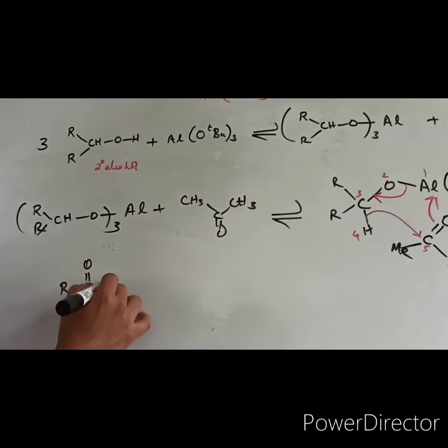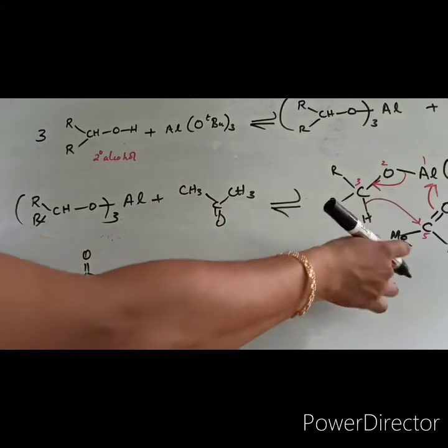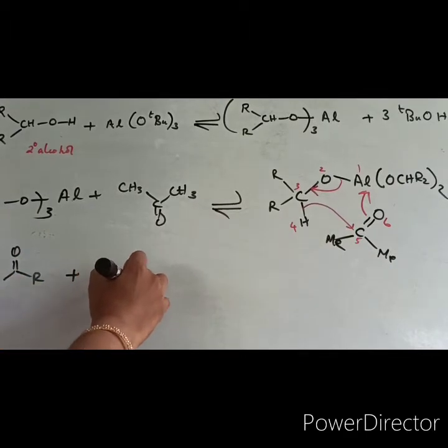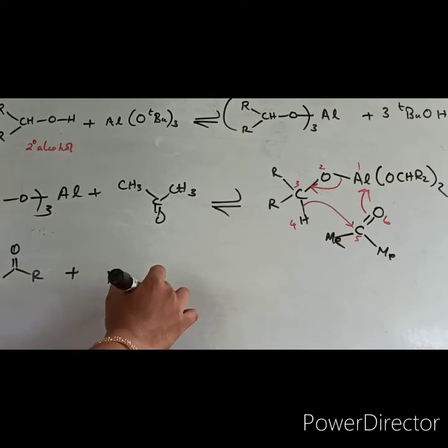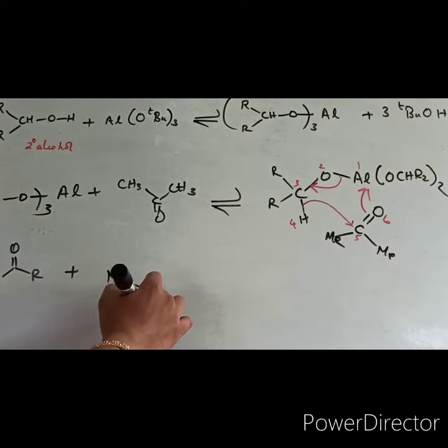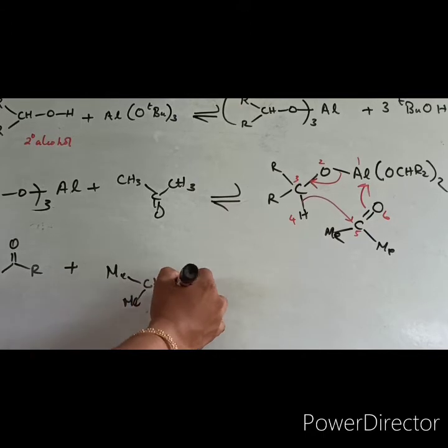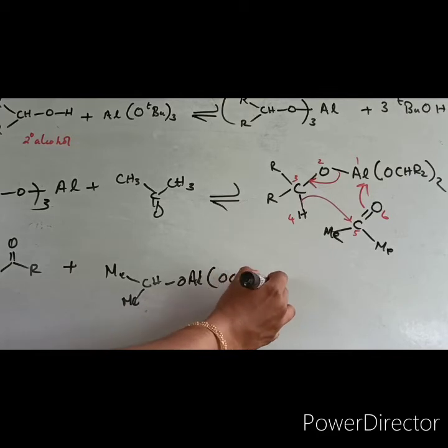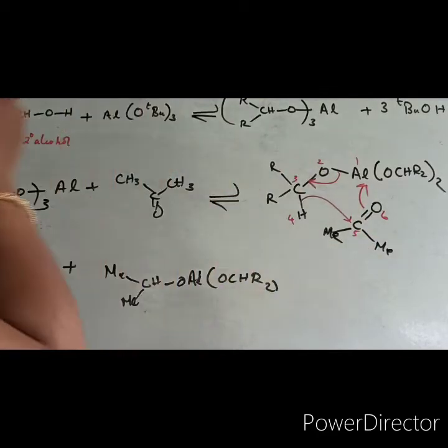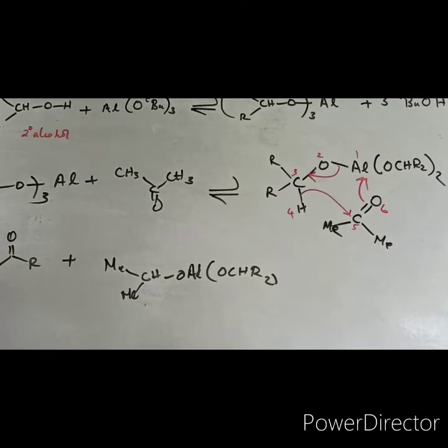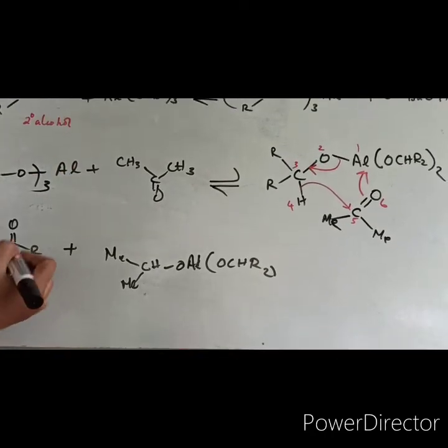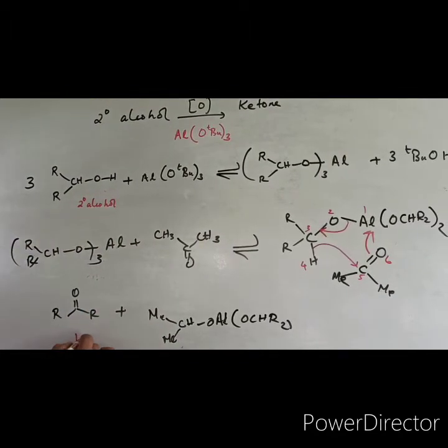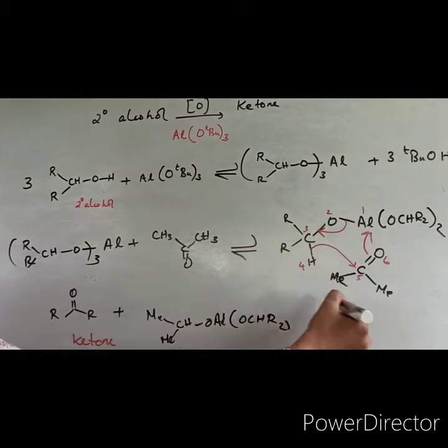R-C double bond O-R, plus remaining portion on the other hand, this will be Me2-CH-O-Al with the remaining alkoxy groups O-CH-R2, because the hydrogen is going to shift. This is how you are getting secondary alcohol oxidation to be done. Secondary alcohol is converted into ketone. The cyclic intermediate is proper.